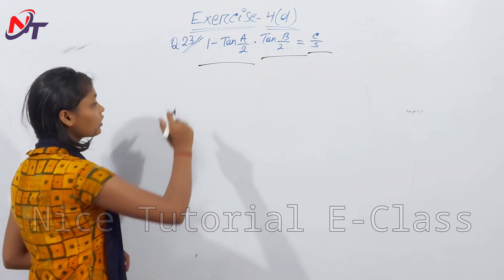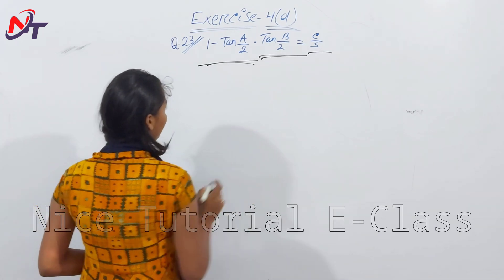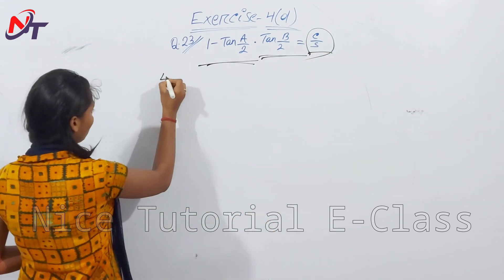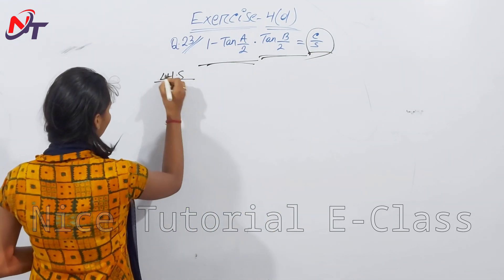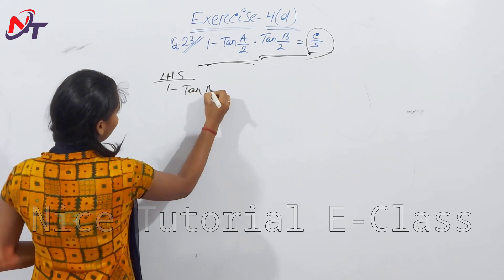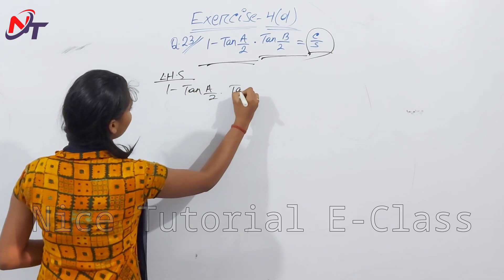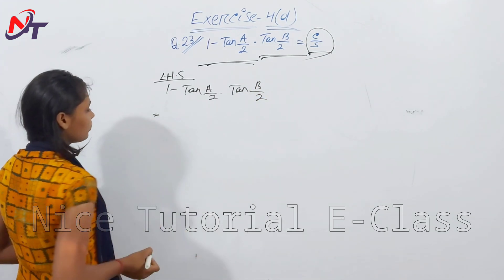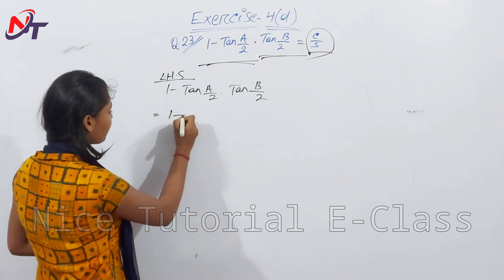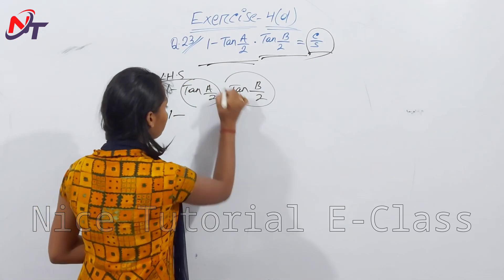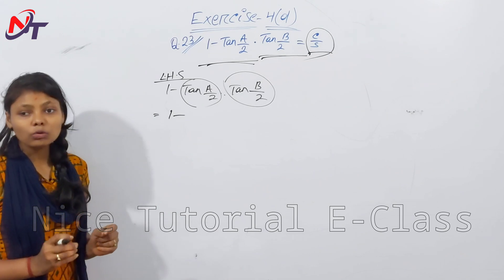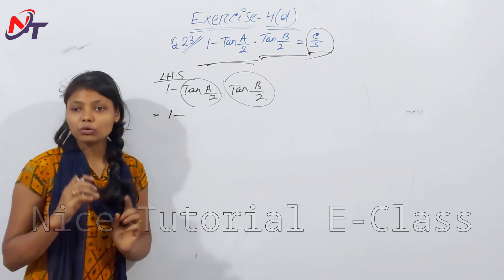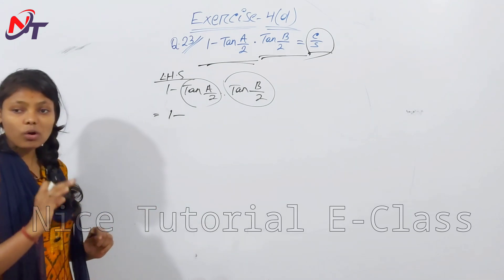Left-hand side: 1 - tan(A/2)·tan(B/2). We start by expanding tan(A/2) using the theorem, putting tan(A/2) as sin(A/2) over cos(A/2).